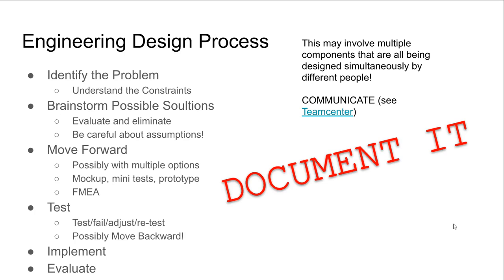First, be aware that engineering design happens in a process. Depending on who you ask, this process has a different number of steps, but in general this is a good way to look at it: you need to identify the problem and understand the constraints. Constraints might sound like they hold you back, but it's actually the constraints that drive you forward. The more you know about the constraints, the easier your job as a designer becomes. A lot of design work is running down what the constraints are — so identify the problem and brainstorm possible solutions.